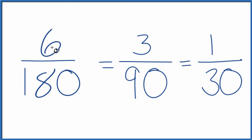So we've simplified 6 over 180 down to 1 over 30. And these are all equivalent fractions. If you divide 6 by 180, or 3 by 90, or 1 by 30, you'll get the same number. It's just that we've simplified or reduced 6 180ths down to 1 30th.